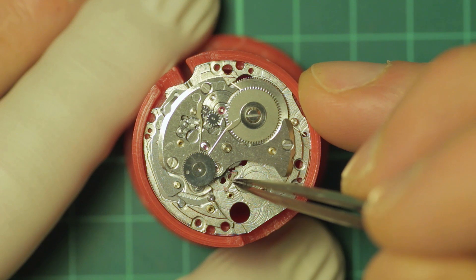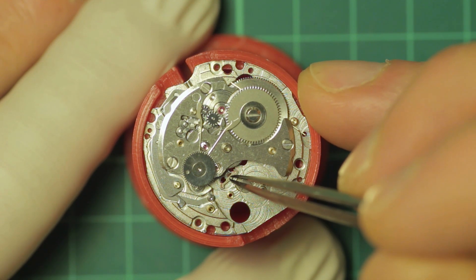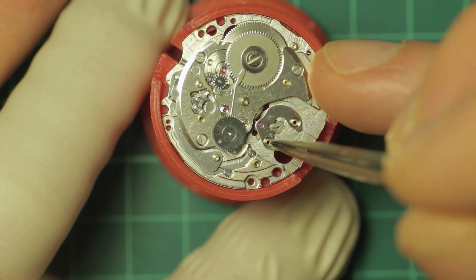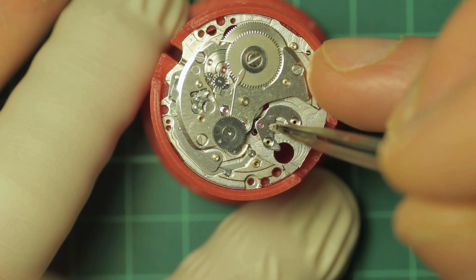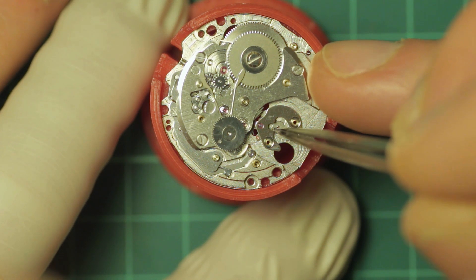And here I'm refitting the pallet fork followed by the pallet fork bridge. And on this particular movement I oil the pallet jewels through the access holes on the dial side of the movement.